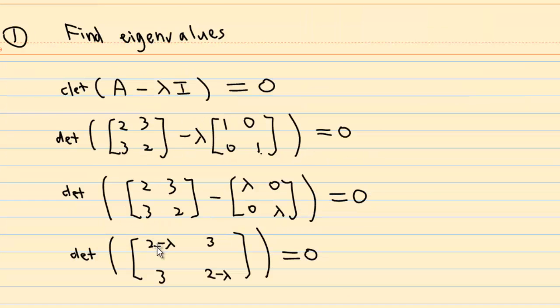So this gives us determinant of 2 minus lambda 3, 3, 2 minus lambda equal to 0.